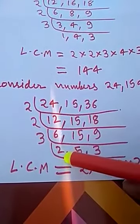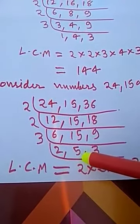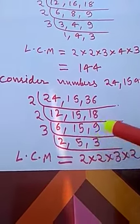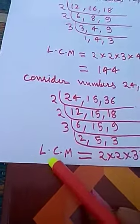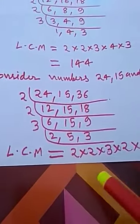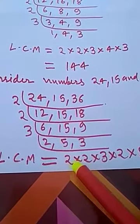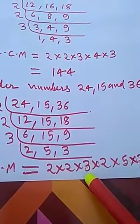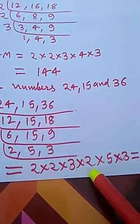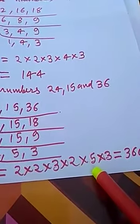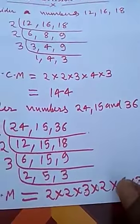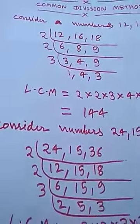LCM = 2 × 2 × 3 × 2 × 5 × 3, which equals 360. So the LCM of 24, 15, and 36 is 360.